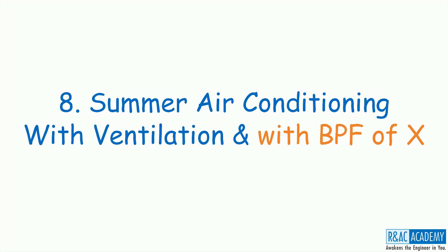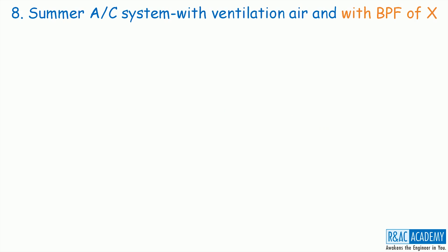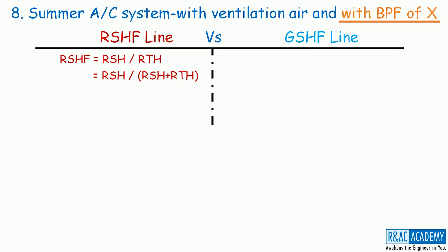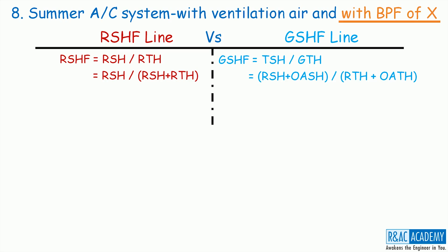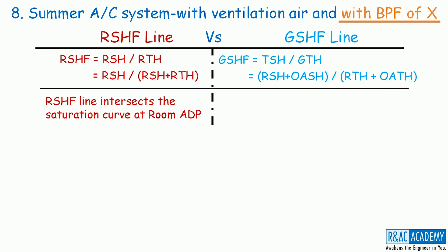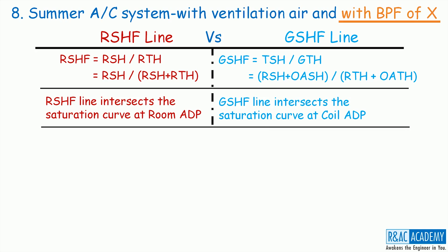This is the 8th and the last lecture in the series of lectures on psychrometry. In this lecture, I will discuss the summer air conditioning system with ventilation air, in this case with bypass factor equal to x. Let me first summarize about the RSHF line and the GSHF line. RSHF is the room sensible heat factor and it is equal to RSH divided by RTH. The RSHF line intersects the saturation curve at room ADP and the GSHF line intersects the saturation curve at coil ADP.